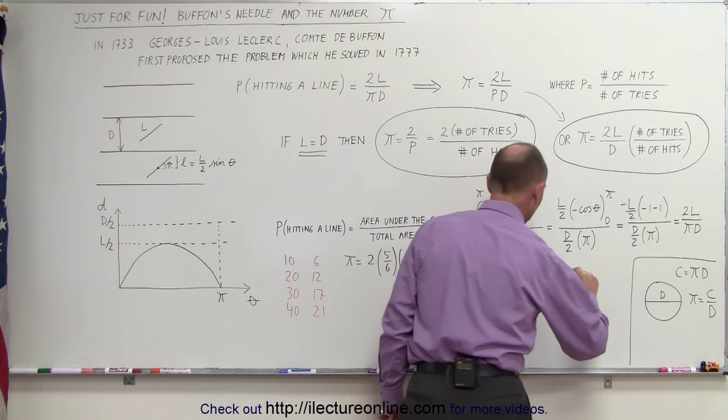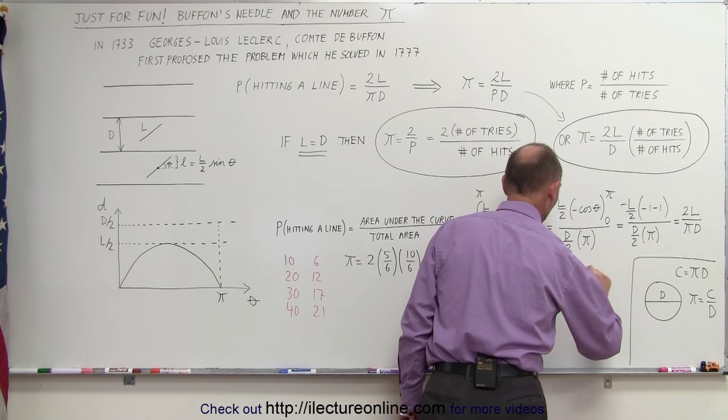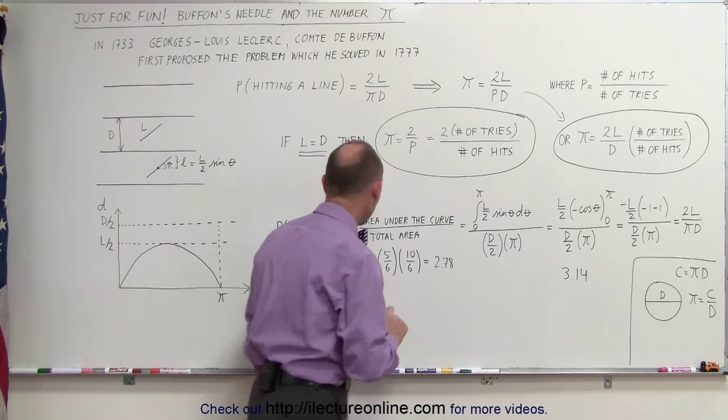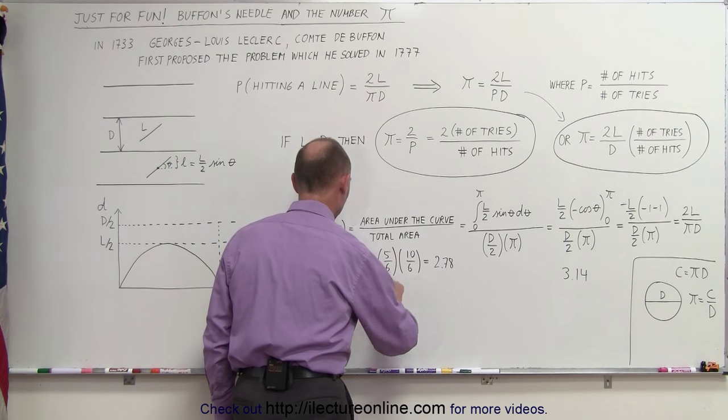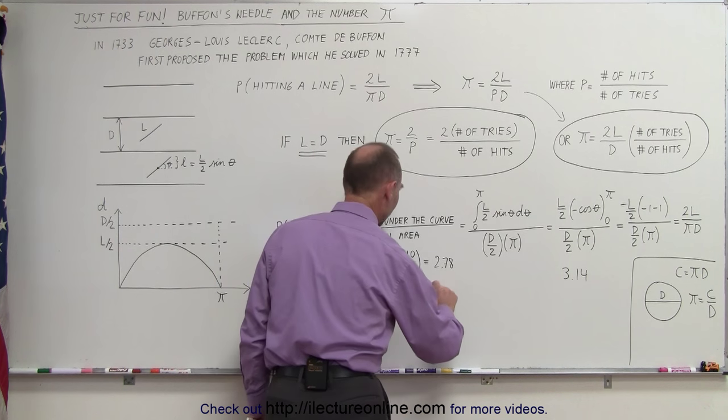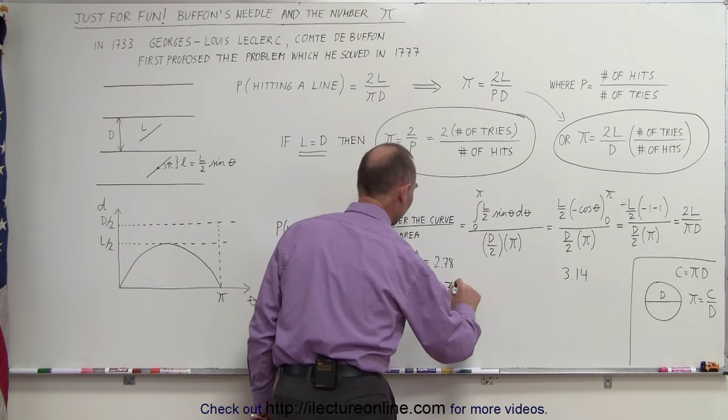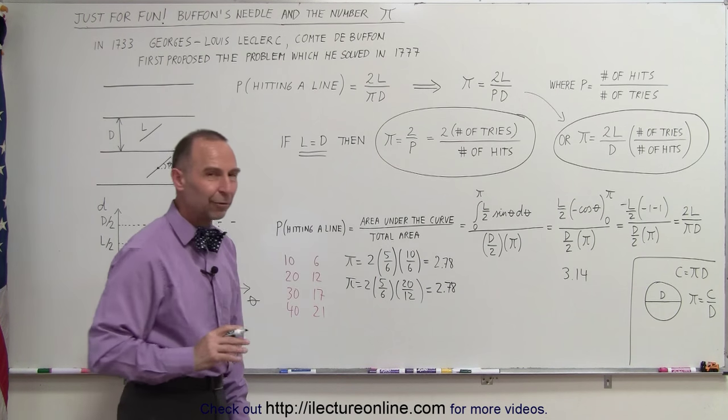Remember, pi to 2 decimal places is 3.14, so we've got fairly close to that. Let's try the second one. Well, pi is equal to 2 times the ratio. The ratio is the same, so again, we got 2.78.